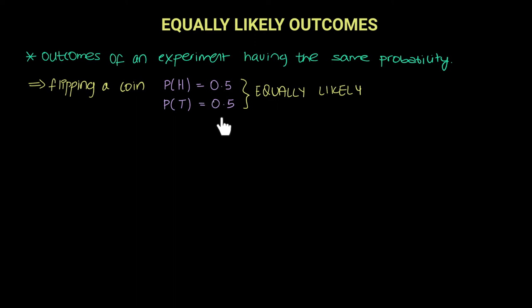They had a 50-50% chance. They were two outcomes and they had the same probability. Therefore, the probability of landing on a head was 0.5 and the probability of landing on a tail was 0.5. Therefore, they were equally likely.